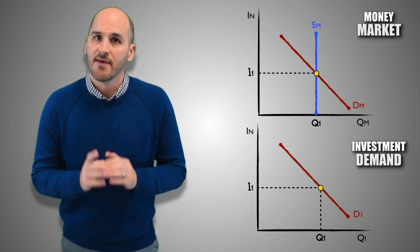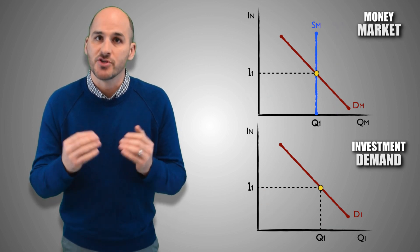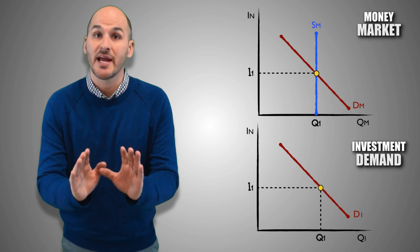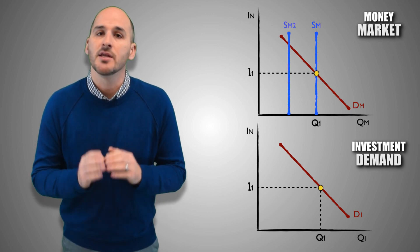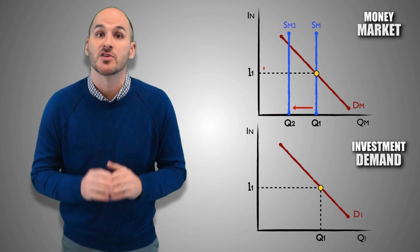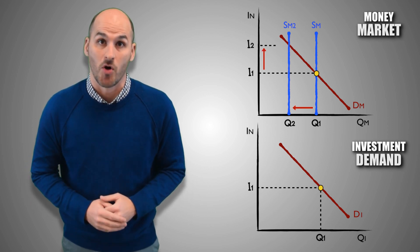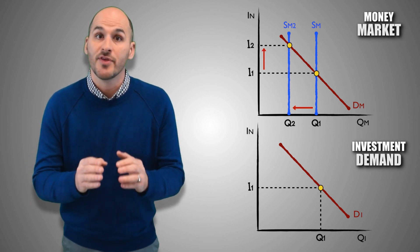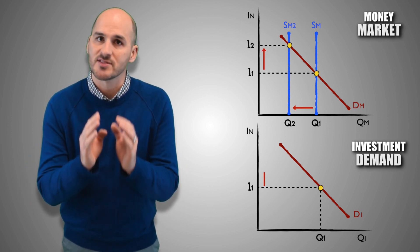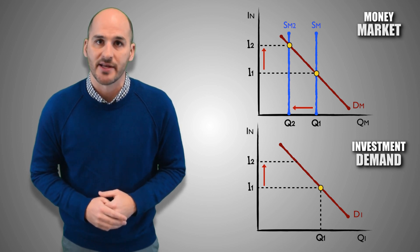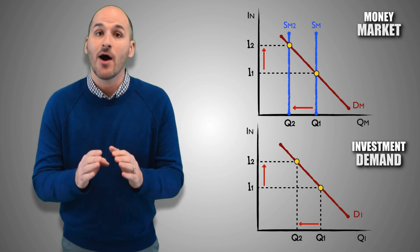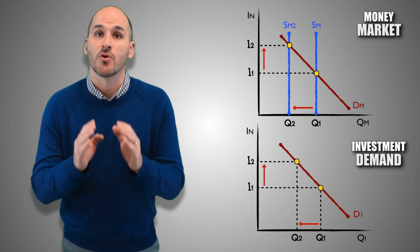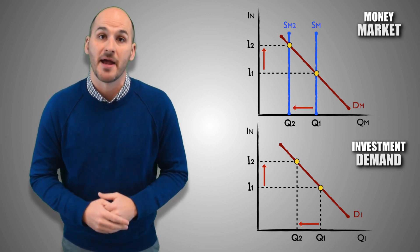By contrast, if the Fed wants to reduce investment spending to help restrain aggregate demand in order to stabilize the economy, it needs to use monetary policy that will cause the nominal interest rates to rise in the money market. This should act as a deterrent and cause less investment spending in the aggregate economy. Firms will become either unwilling or unable to take out loans and now have an incentive to avoid higher interest rates to borrow from banks.